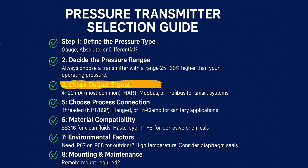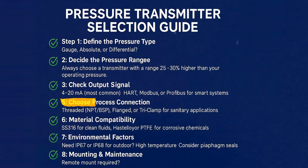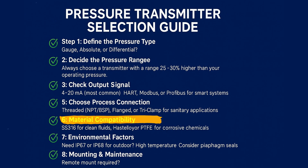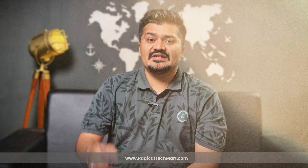You can also choose digital signals like HART or PROFIBUS for smart systems. Step 5: Choose the process connection — threaded NPT or BSP, flange, or Tri-clamp for sanitary applications. Use a flush diaphragm for slurry or viscous media. Step 6: Material compatibility — SS316 for clean fluids, Hastelloy or PTFE for corrosive chemicals.